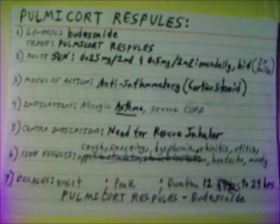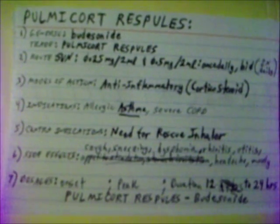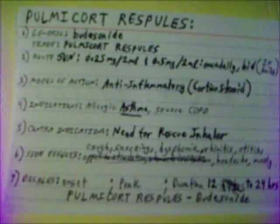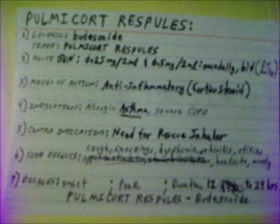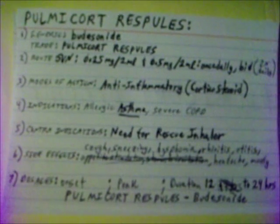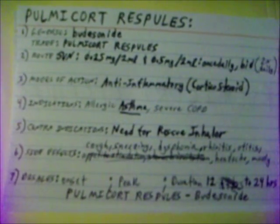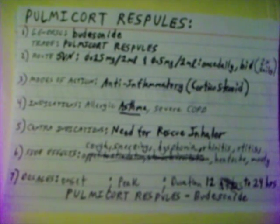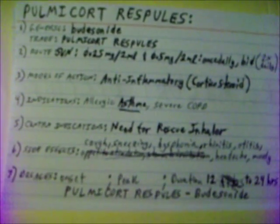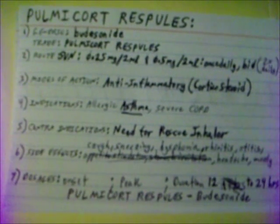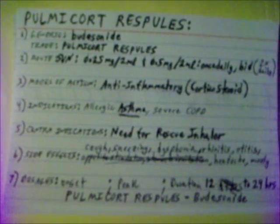Contraindications for Pulmicort Respules: not for use as a rescue inhaler. Side effects are cough, sneezing, dysphonia — which is impaired speech — arthritis, rhinitis, otitis, headache, and moodiness. Pulmicort Respules works for 12 to 24 hours.